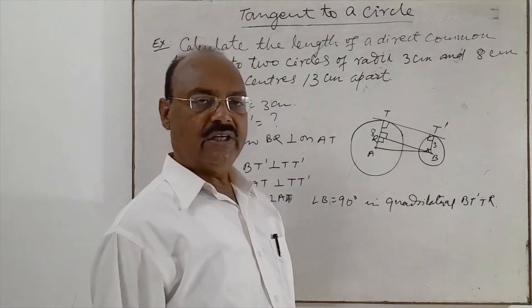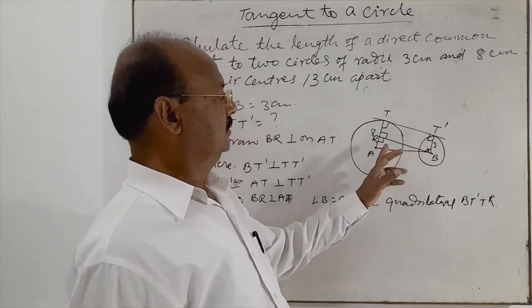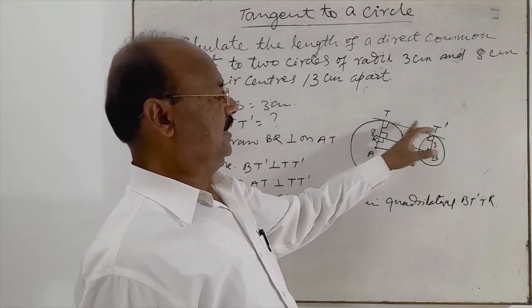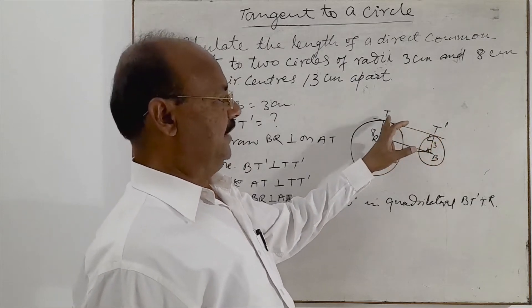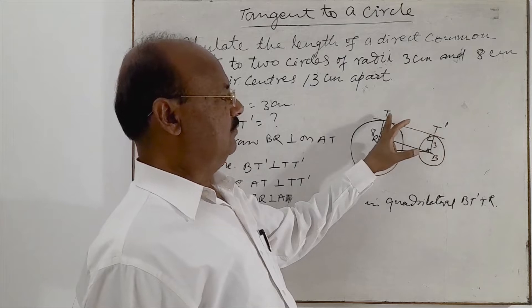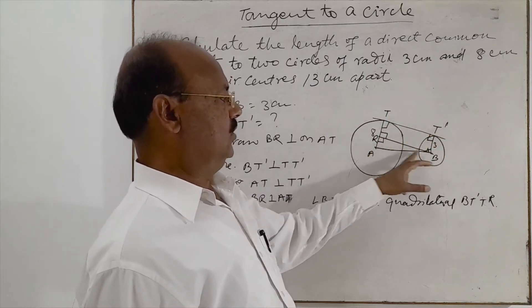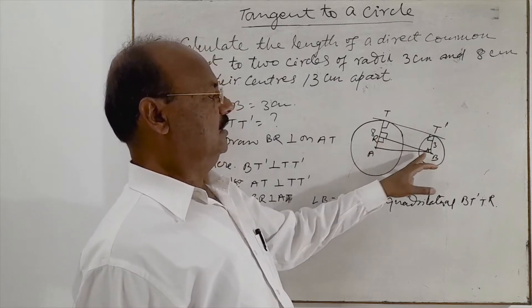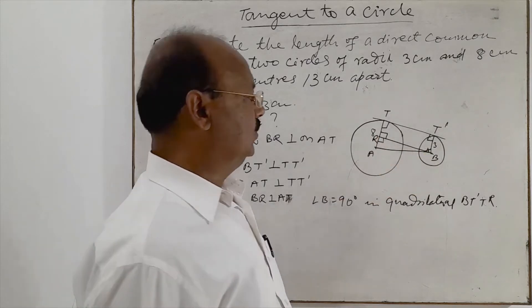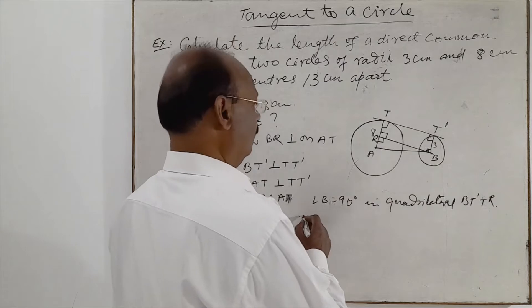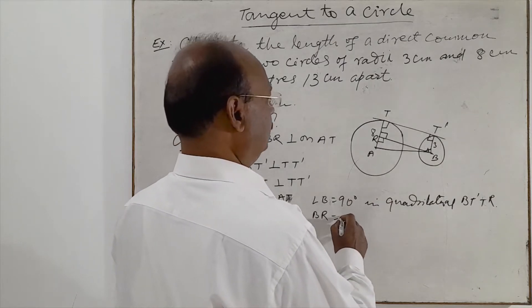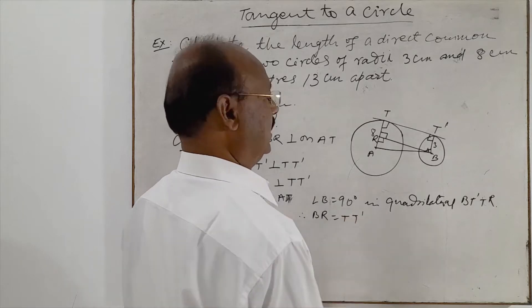So what benefit we are getting here? BR is equal to TT'. We have to find out TT'. In place of finding out TT' we can easily find out BR in the right angle triangle ARB, correct? Therefore, BR is equal to TT'.